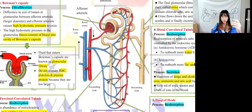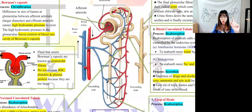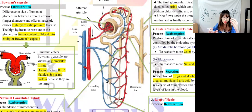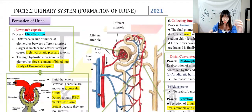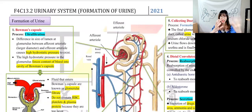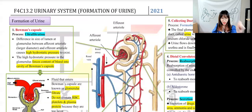So the first process, ultrafiltration, happens at number one: the glomerulus and Bowman's capsule together. Glomerulus and Bowman's capsule are usually counted as one unit. The glomerulus has two endings — an afferent arteriole and an efferent arteriole. Arteriole means a smaller version of an artery.